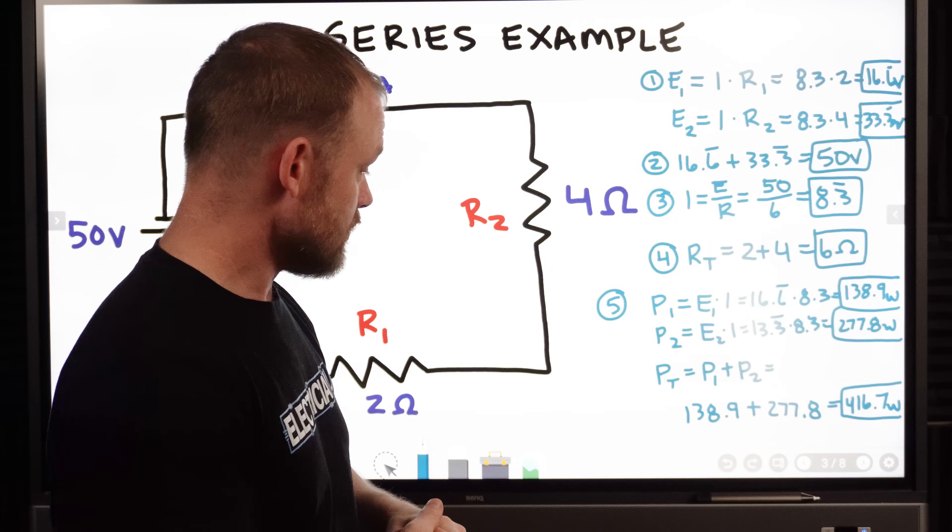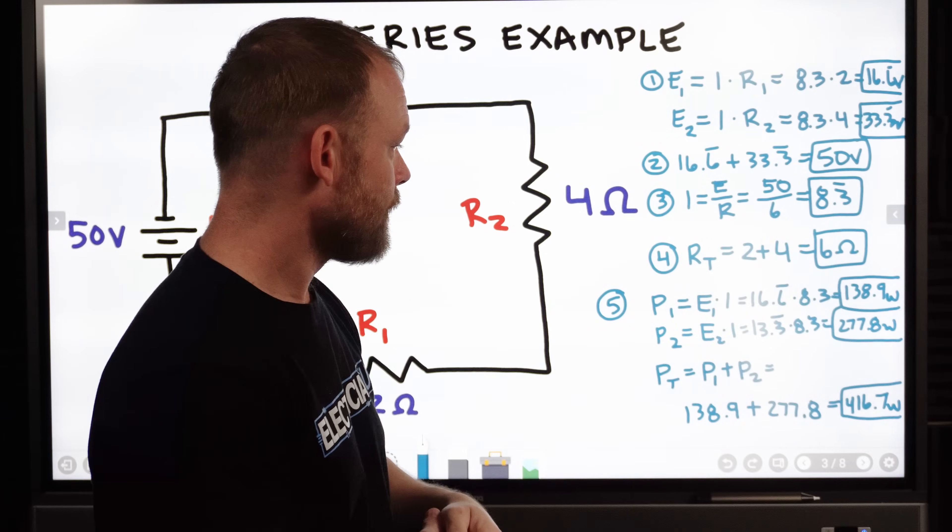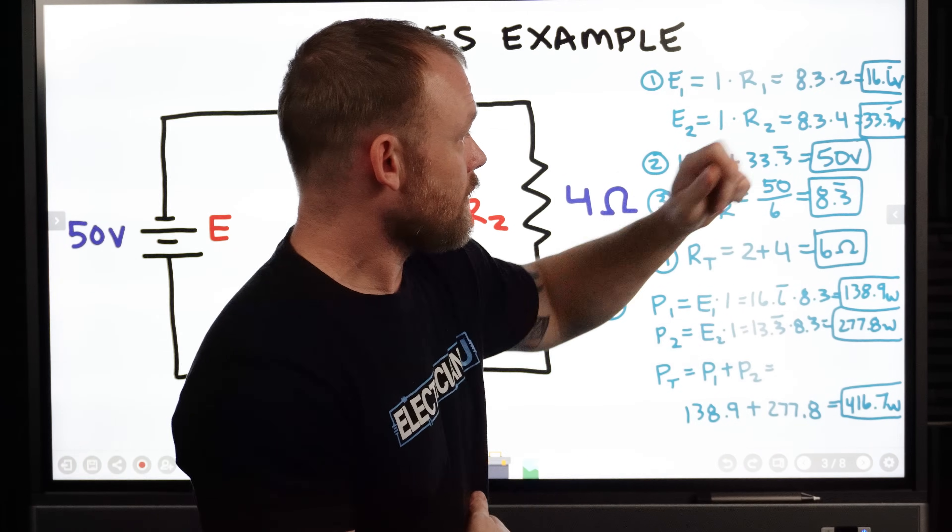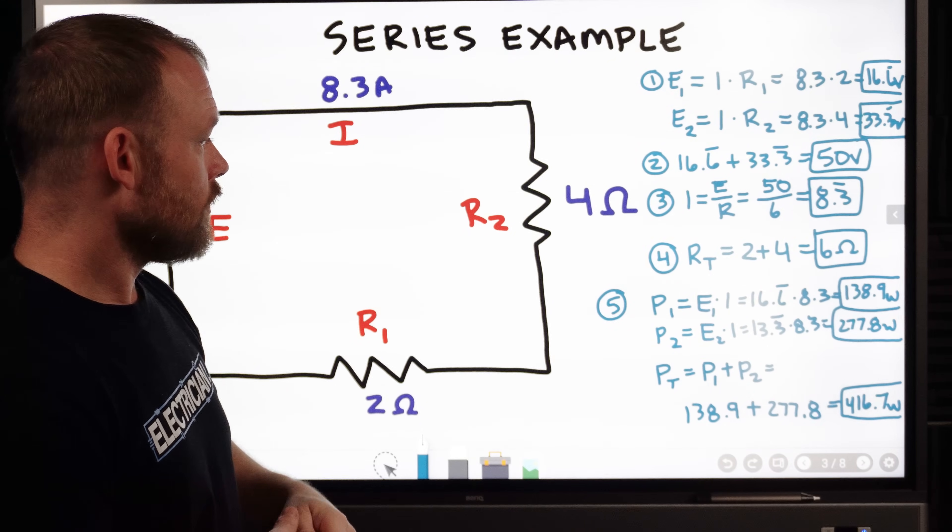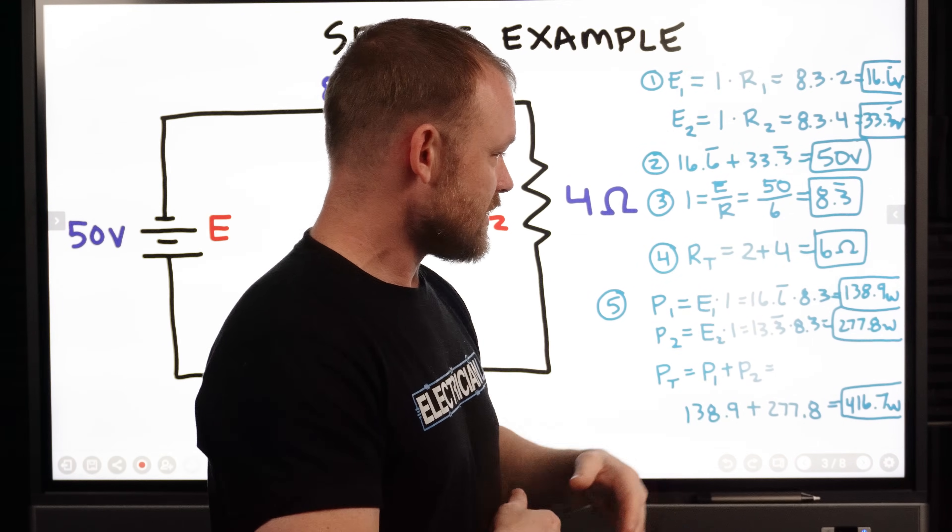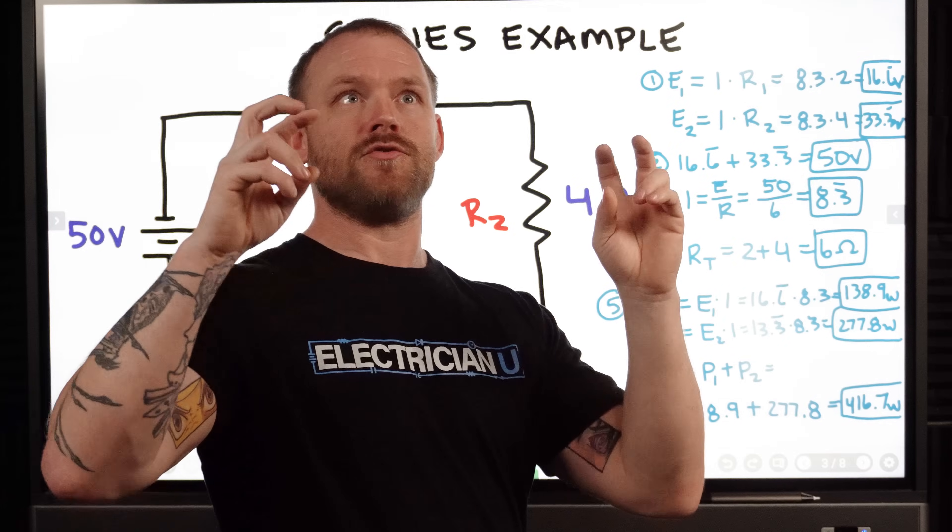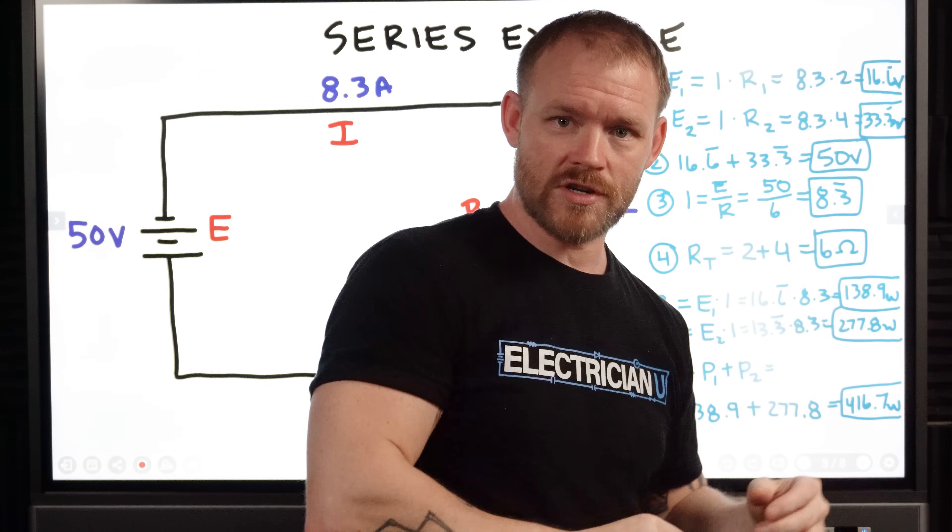Then we take resistor two. That is P two equals E two times I. So E two was 33.3 volts dropped. We have 8.3 amps in our circuit and multiply those together and you get 277.8 Watts.